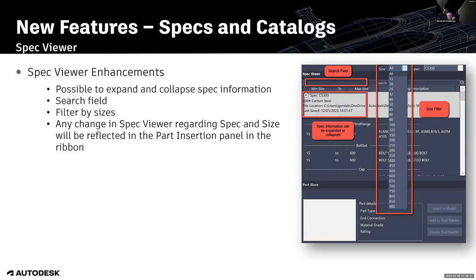Moving on to the spec viewer enhancements — there are four new features. The first allows you to expand or collapse the spec information. The second is a search field. Third, you are now able to filter by sizes. And the fourth: any change in the spec viewer regarding spec and size in those selection lists will be reflected immediately in the part insertion panel and the ribbon, and vice versa.